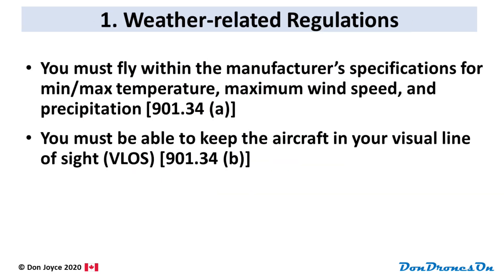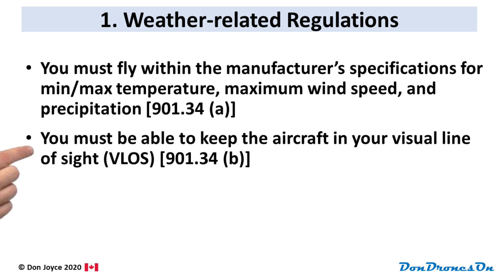The Canadian RPAS regulations have weather-related elements built into many different parts. The main one is this first one: you must fly within the manufacturer's specifications for minimum and maximum temperature, maximum wind speed, and precipitation. That's Rule 901.34, Section A. Closely related to that is the second one: you must be able to keep the aircraft in your visual line of sight, or VLOS. That's 901.34, Section B.